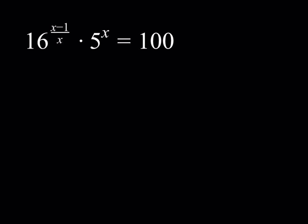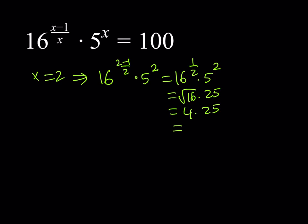It doesn't work because I get 1 times 5. How can I get 100? 16 times 5 is 80. 16 times 25 is 400. Oh, that might be a good clue. 4 times 25 is 100. But how can I get 4 from 16? I can square root it. How can I get 25? I can use x equals 2. So, suppose x equals 2. Then what happens? You get 16 to the power 2 minus 1 over 2 multiplied by 5 to the second power.